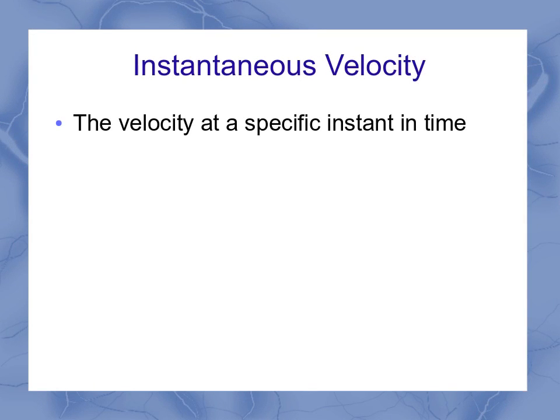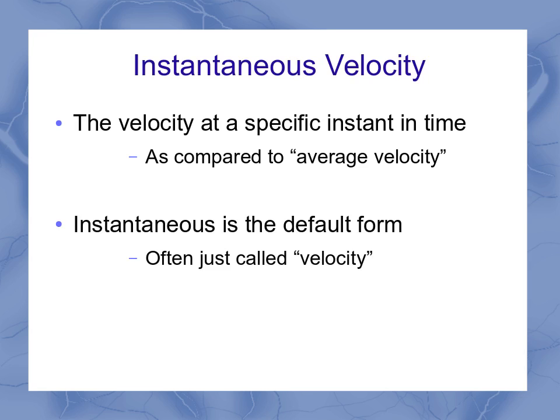Instantaneous velocity specifically means the velocity at a specific instant in time. This is compared to average velocity, which was over a time span, how did the velocity average out? The instantaneous velocity is the default form, and so we often leave the word instantaneous off and just call it velocity.